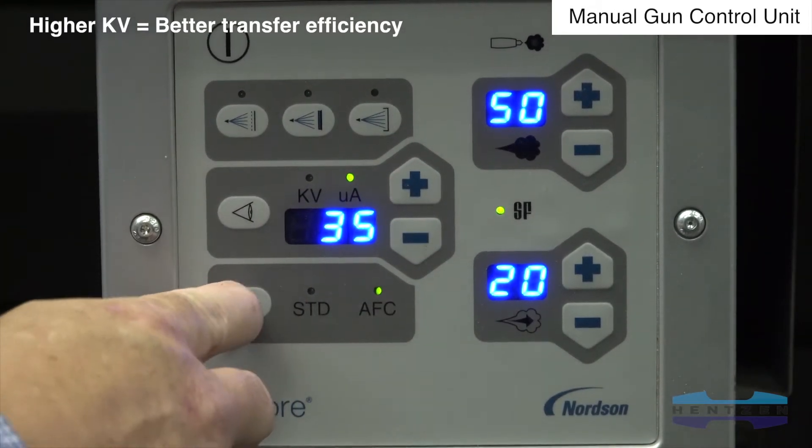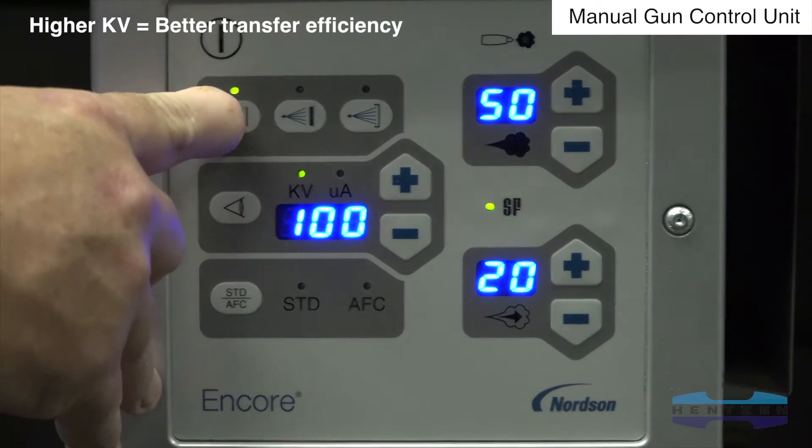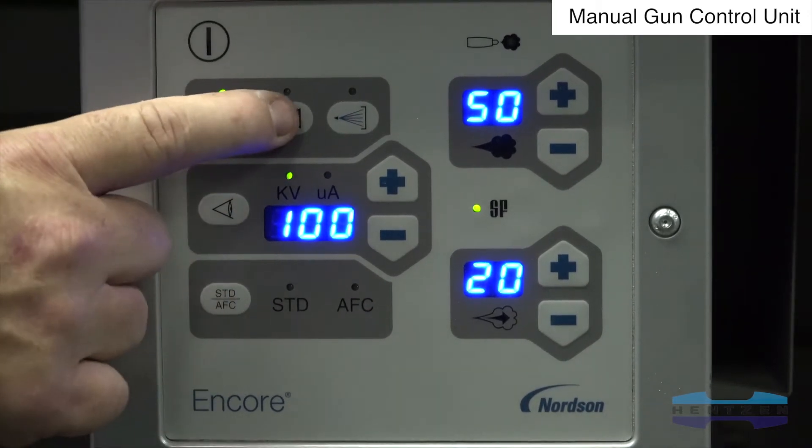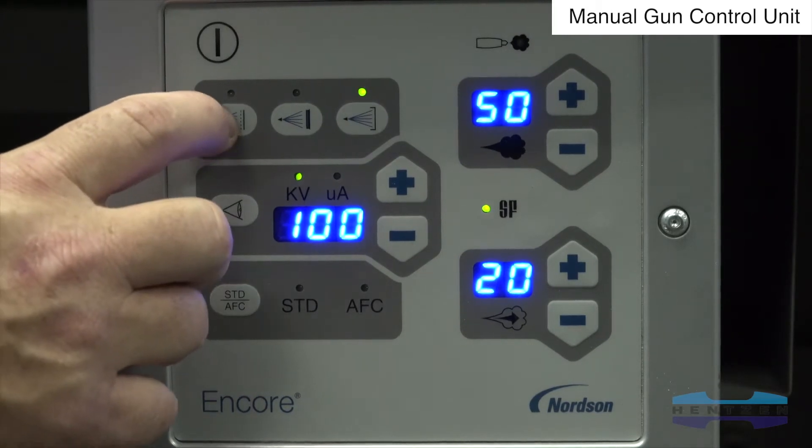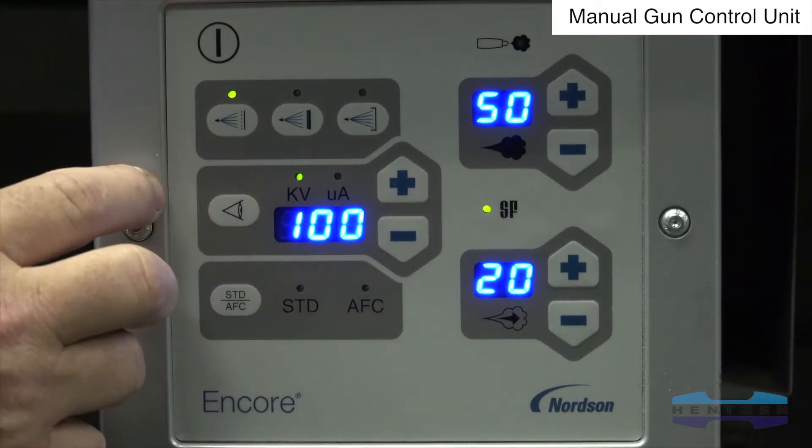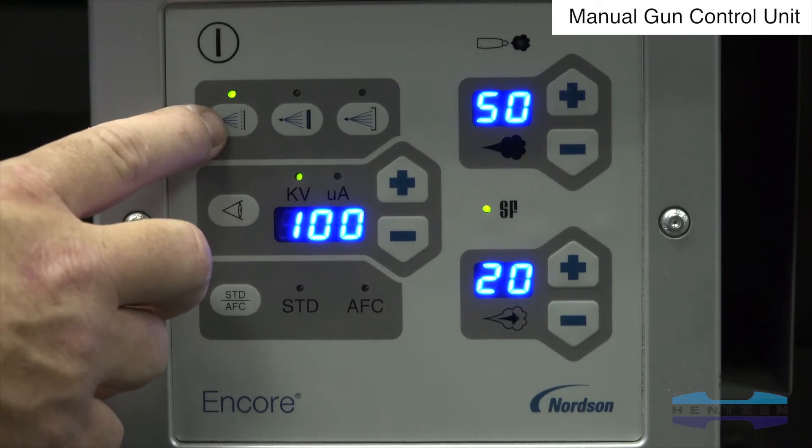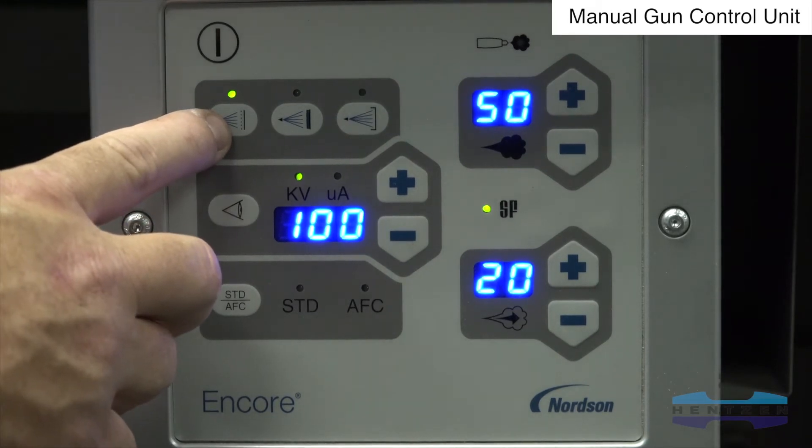KV should be lowered only when it becomes necessary to reduce back ionization or other undesirable effects that cannot be controlled otherwise. It may also be necessary to lower KV when recoating a part to reduce the chances of back ionization caused from charging the cured finish beneath.